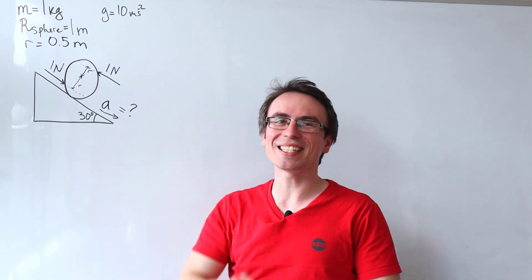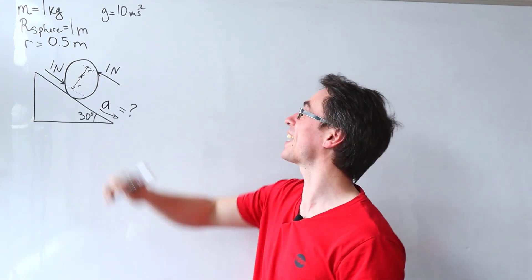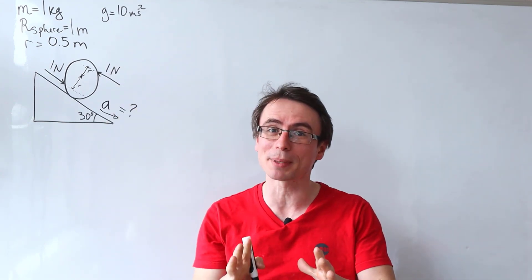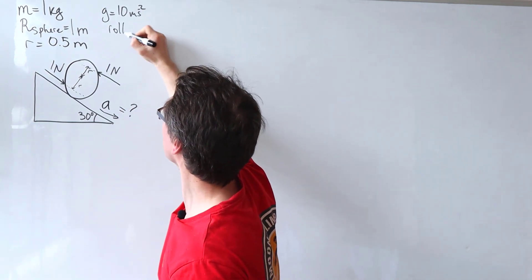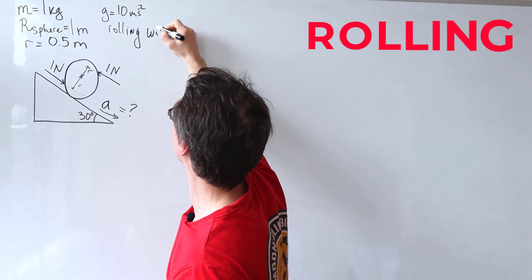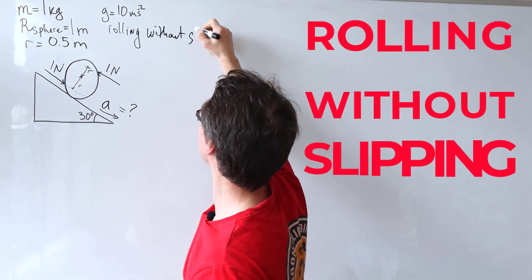The angle of the inclined plane is 30 degrees and we can even take G to be 10 meters per second squared. Another crucial condition for this problem is that this sphere is rolling without slipping.